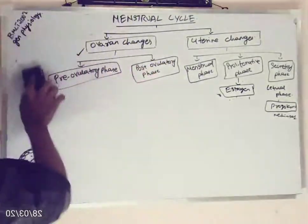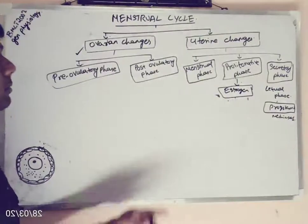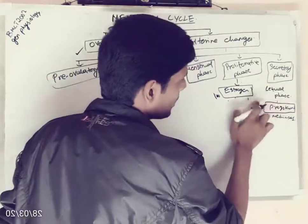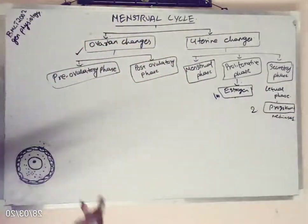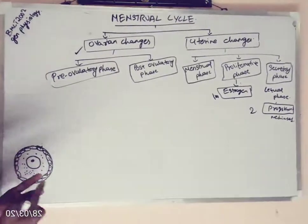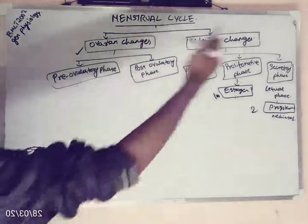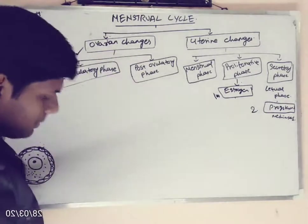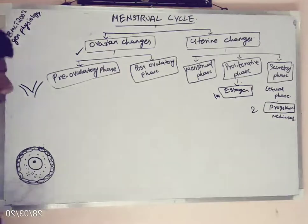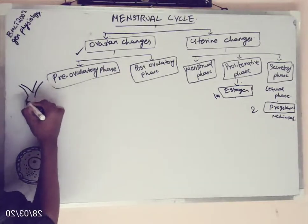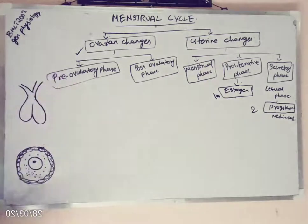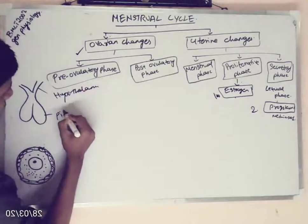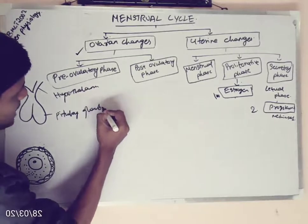Now, there are two important key hormones in this menstrual cycle: estrogen and progesterone. Before discussing how these two hormones regulate the menstrual cycle, we need to introduce one more gland, also called the master gland, which regulates all the hormones in the body. That is the pituitary gland — or if you are over smart, the hypothalamus. This is the pituitary gland and this part is the hypothalamus, also called the master gland of the body.